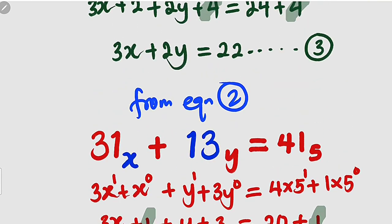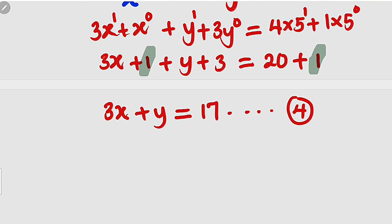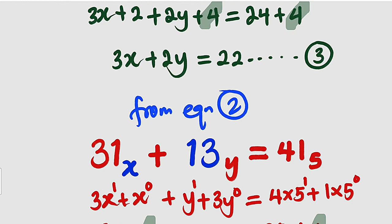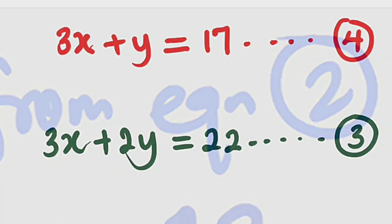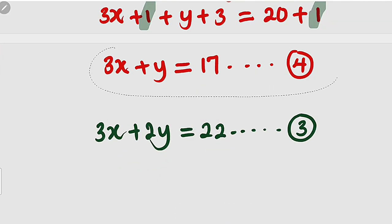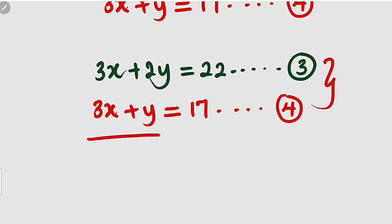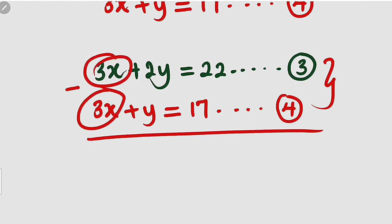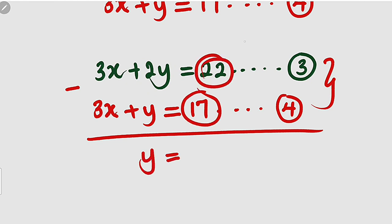So we need to solve equation number 3 and equation number 4 simultaneously. Equation number 3, let me just copy that. Let me copy equation number 4 as well. I think we can use elimination by subtracting equation 4 from equation 3. 3x minus 3x is 0. 2y minus y is a single y. So we have y here equals 22 minus 17 is 5. So we have y equal to 5.